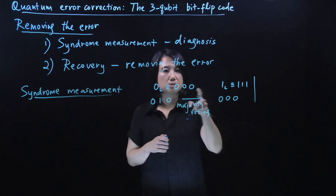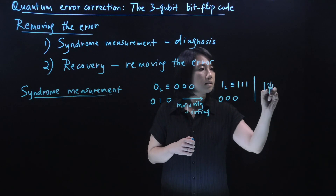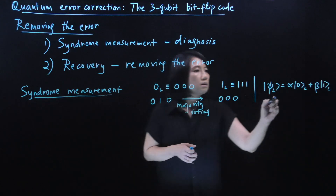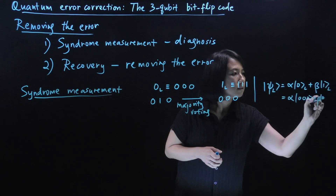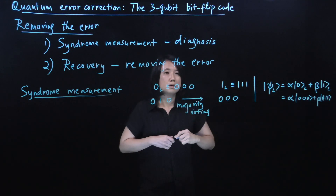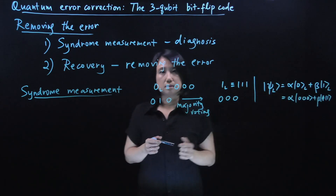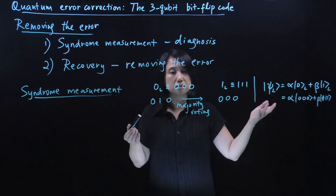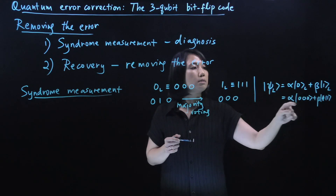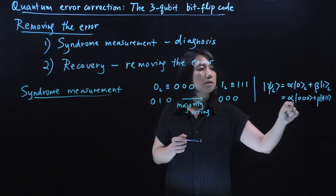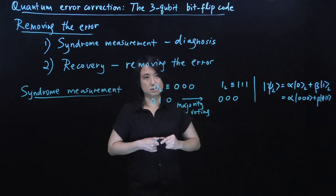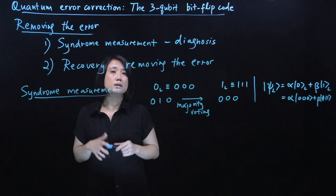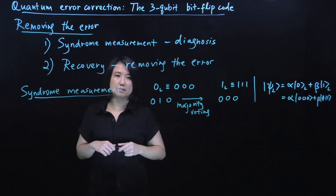In the quantum case, your code state is not just 000 or 111 — it's a general linear superposition: alpha times |000⟩ plus beta times |111⟩. You can no longer simply read what state this is, because alpha and beta are unknown coefficients. Measuring in the computational basis would destroy the coherences between the two states — that's really where your logical qubit information lies. So we need to be more clever to do error diagnosis.